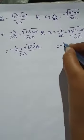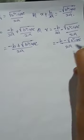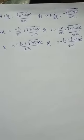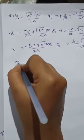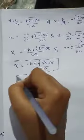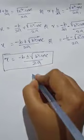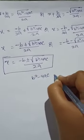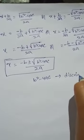Or x = (−B − √(B² − 4AC)) / 2A. So x has 2 values: x = (−B ± √(B² − 4AC)) / 2A. Here, B² − 4AC is called the discriminant.